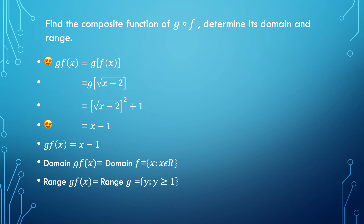The domain of composite function g∘f(x) = x − 1 equals the domain of function f, which is the set of x such that x ≥ 2. And the range of composite function g∘f is the set of y such that y ≥ 1.